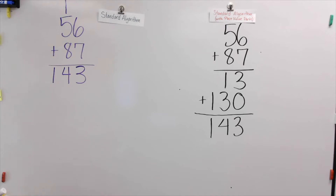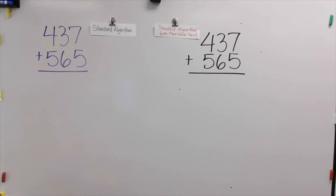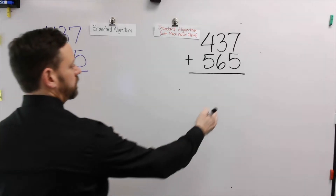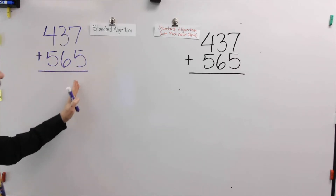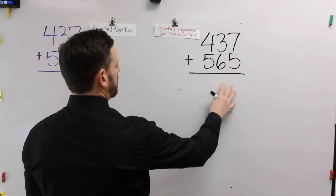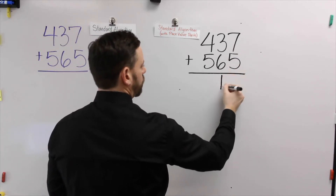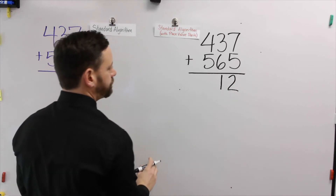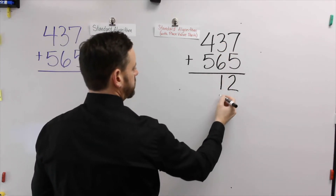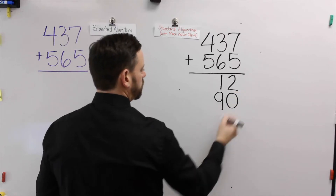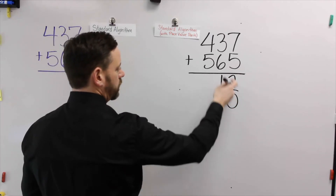Next I'm going to show you how to do it with a 3-digit number. We're going to show you the standard algorithm with place value parts with a larger number and the standard algorithm, and compare the two so you can see how they're connected. We'll start with the standard algorithm with place value parts. Again, I'm going to start in the ones column because that's how we do it with the standard algorithm — though really you can start in any column using place value parts. 5 plus 7 is 12, so I'm going to write the whole number 12 underneath. 30 plus 60 is 90, I'm going to write the whole number underneath, keeping place value positions in line — the ones and the tens.